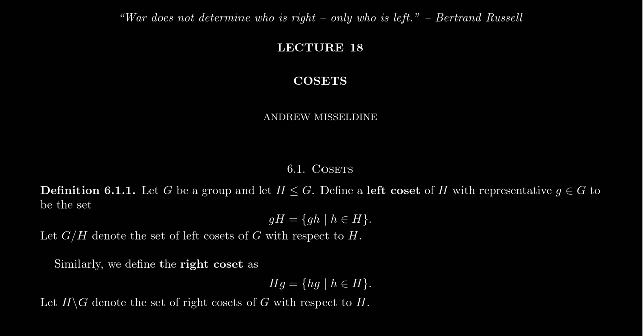Welcome back to our lecture series, Math 4220, Abstract Algebra 1 for students at Southern Utah University. I'm your professor today, Dr. Andrew Misseldine. In this lecture 18, we're going to start the very short chapter in Tom Judson's Abstract Algebra textbook about cosets and Lagrange's Theorem, Chapter 6.